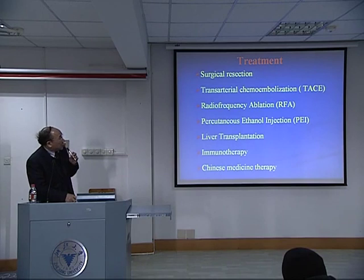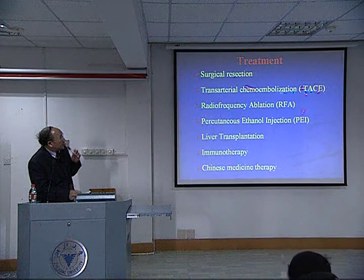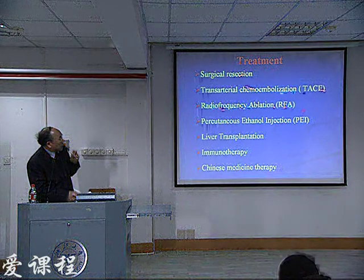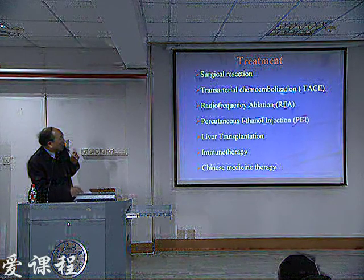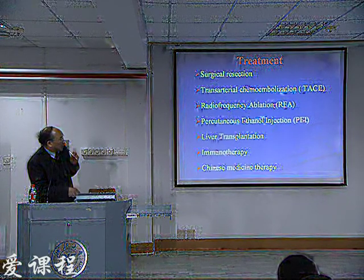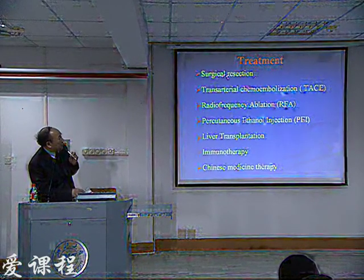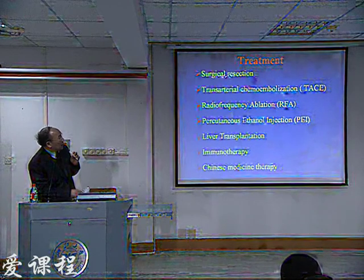The treatment for liver carcinoma includes resection. For liver tumors with poor liver function, we do TACE or RFA — radiofrequency ablation. Another treatment is percutaneous ethanol injection, PEI — injecting alcohol into the tumor — or liver transplantation, immunotherapy, or Chinese medicine therapy. Usually, surgical resection is for early stage when liver function is good.